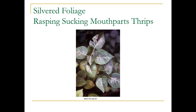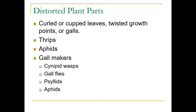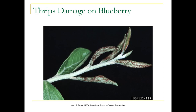Silvered foliage comes from rasping-sucking mouthparts, and the only insect in this group is thrips — always plural. Distorted plant parts — curled or cupped leaves, twisted growth points, or galls — can be caused by thrips, aphids, and various gall makers including wasps, gall flies, psyllids, aphids, and adelgids. Here's the distorted damage on blueberry from thrips.